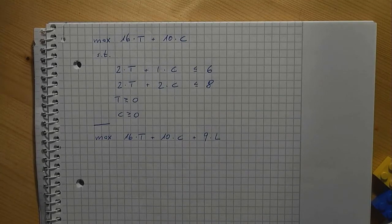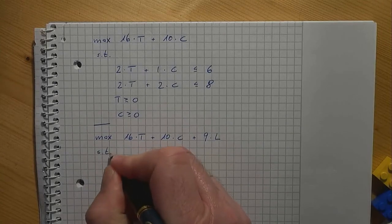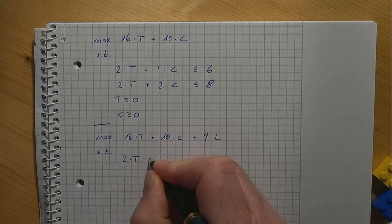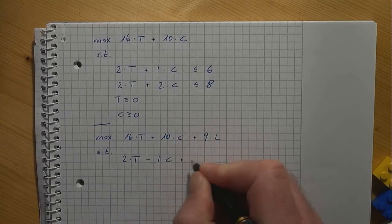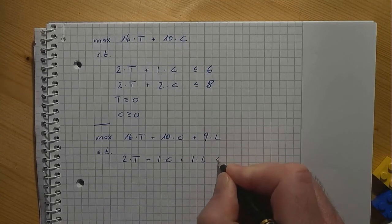Note that we need one 2x4 for each lounger. The capacity constraint for the 2x4s must be modified to take this into account. 2 times T plus 1 times C plus 1 times L is less than or equal to 6.